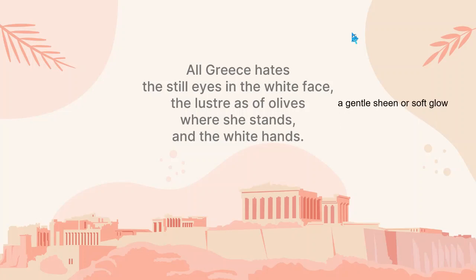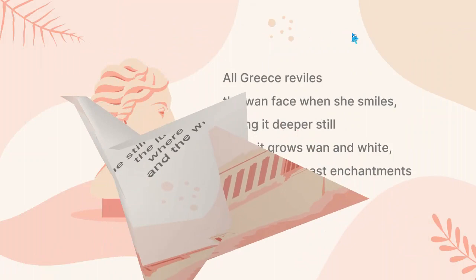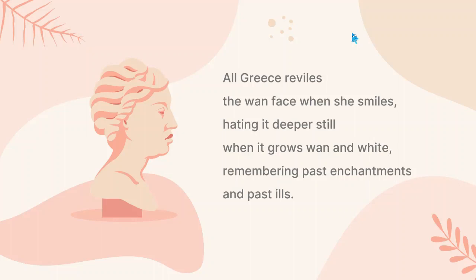The 'luster as of olives' refers to a gentle sheen or soft glow. However, Hilda Doolittle doesn't believe that these things — the color of the olive, the shining of an olive, or a white face — would bring about true beauty, because Helen's character was something else entirely.